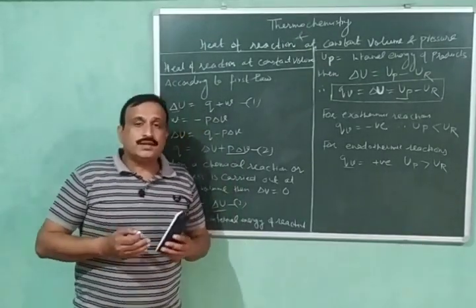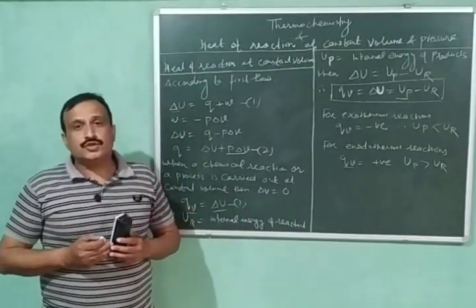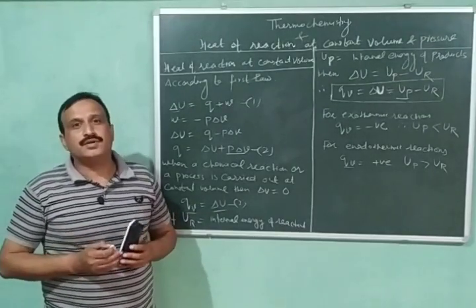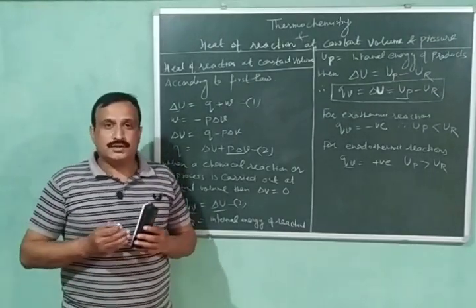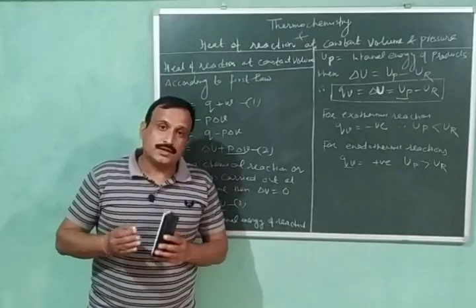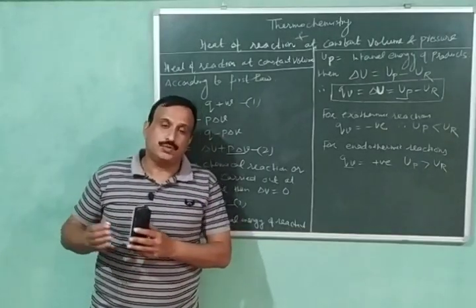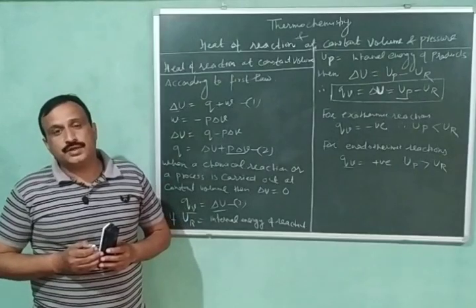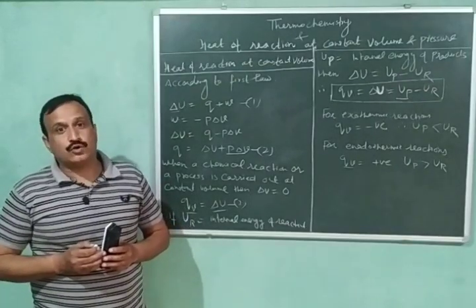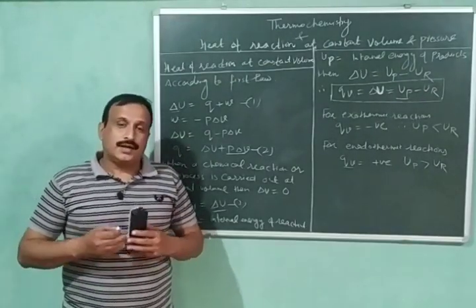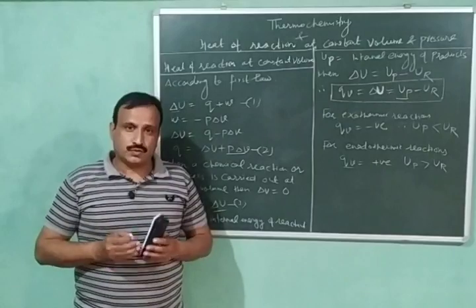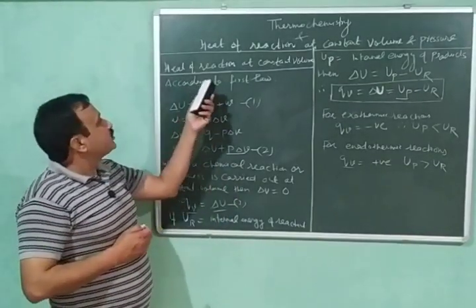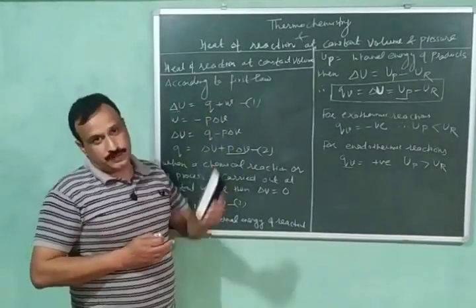The heat changes — the heat evolved or absorbed during any chemical reaction — depend upon the conditions under which that reaction is being performed, that is whether the reaction is carried out at constant pressure or at constant volume. So let us discuss the heat of reaction at constant volume.